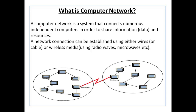What is computer network? A computer network is a system that connects numerous independent computers in order to share information, data, and resources.